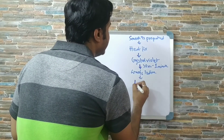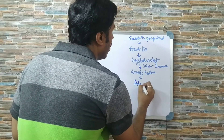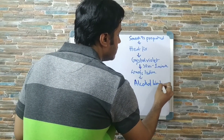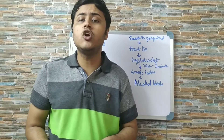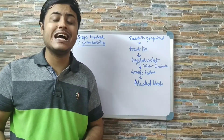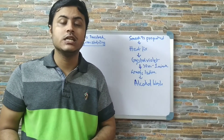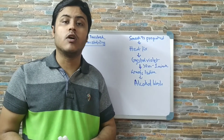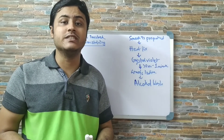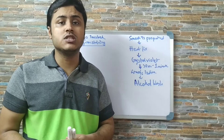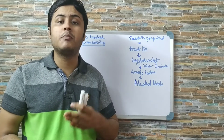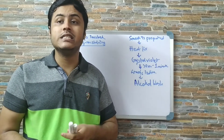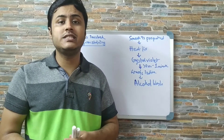Then we perform the most important step: the alcohol wash. Alcohol acts as a decolorizing agent — it removes all the stain from the gram negative bacteria, whereas the gram positive will still retain their primary stain, crystal violet. This is the most critical step in gram staining.